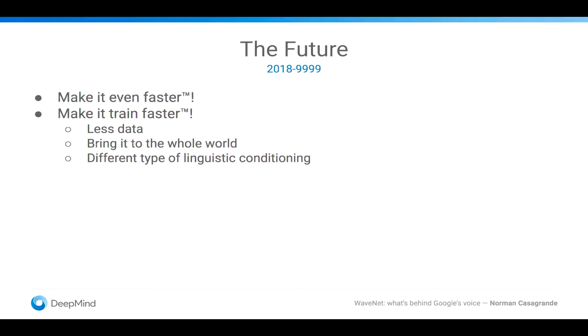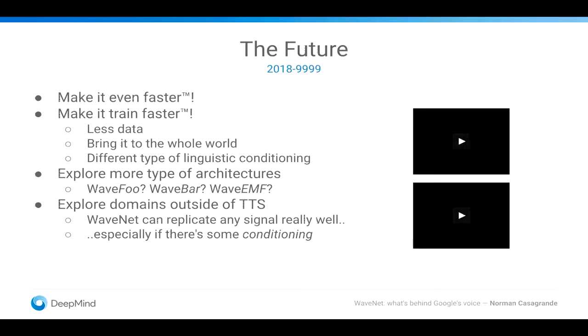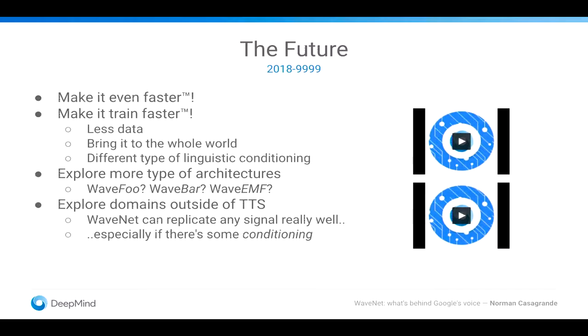And bring it to the whole world. Because right now, since we're kind of data constrained, the assistant is only available in English, German, French, and a bunch of other languages. But we really would like to bring it to the entire world and to all different types of languages. We also have a bunch of different ideas for architectures. Wave, EMF, I'm pretty sure it would be really cool. But I think that more important than that is that you could use this technology to order things outside of text-to-speech.